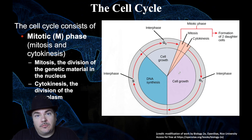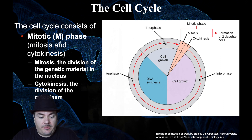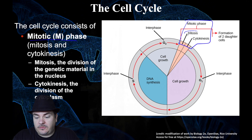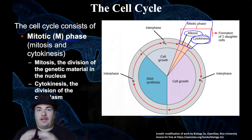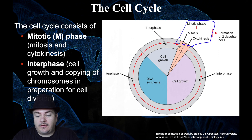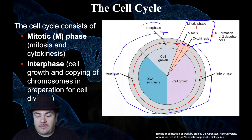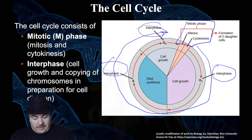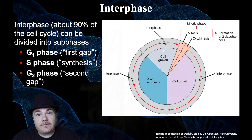Separating the chromosomes happens during mitosis, which is part of the cell cycle. The cell cycle is made up of the mitotic phase, or M phase — which includes mitosis, the proper separation of chromosomes, and cytokinesis, where the cell actually separates into two separate cells. The other part of the cell cycle, outside of M phase, is called interphase. Interphase is made up of three subphases: G1, S, and G2.